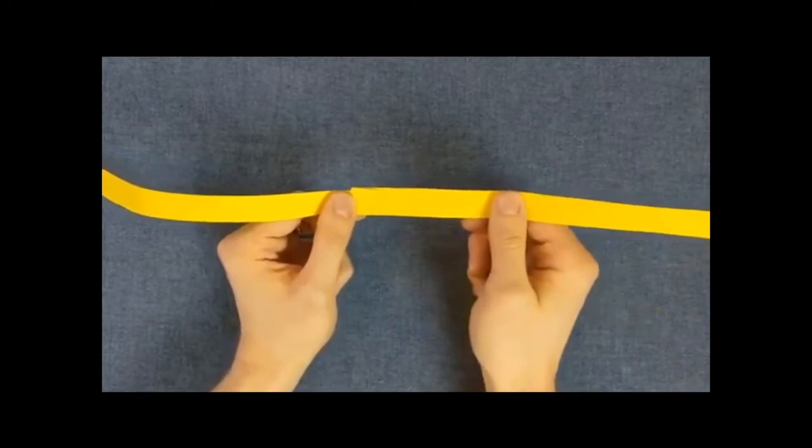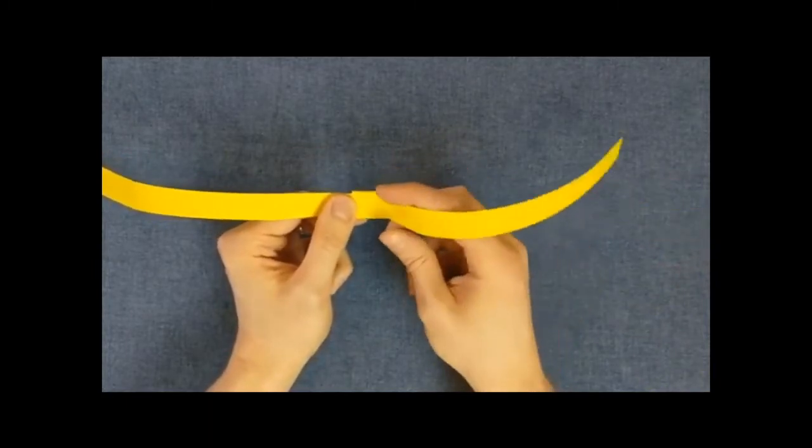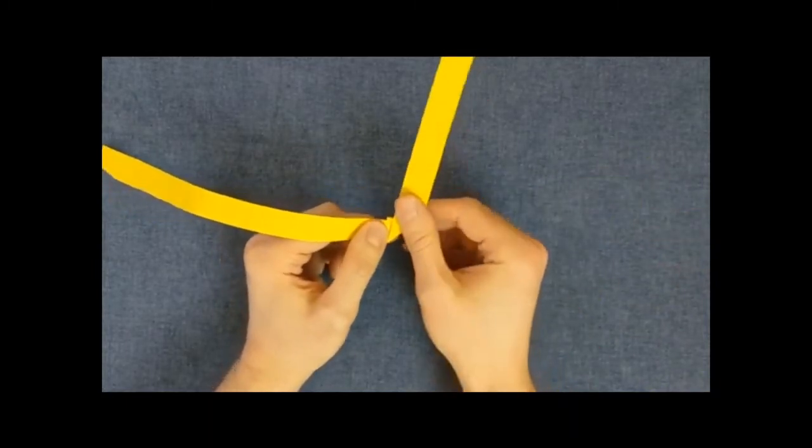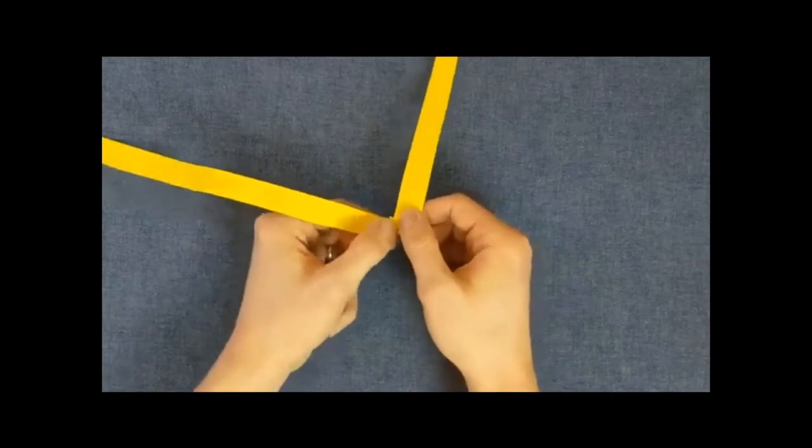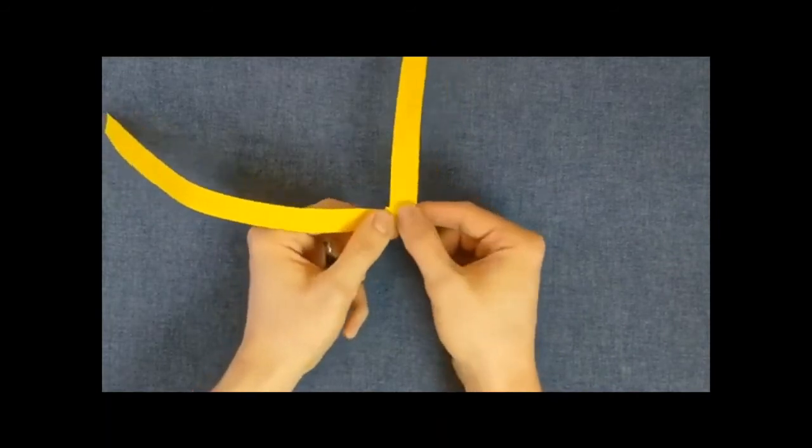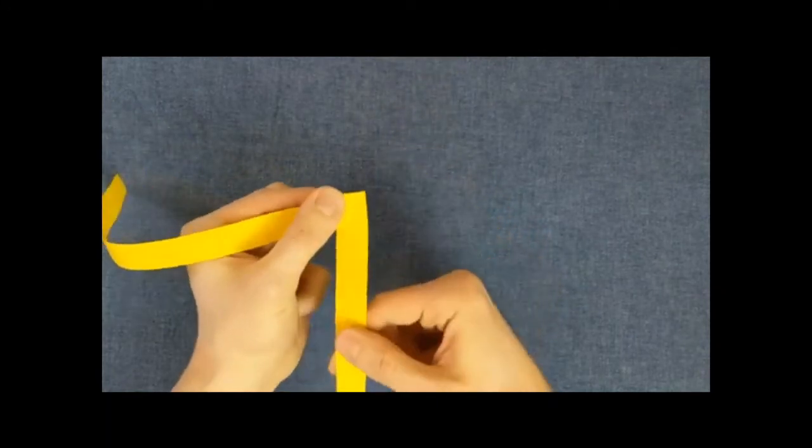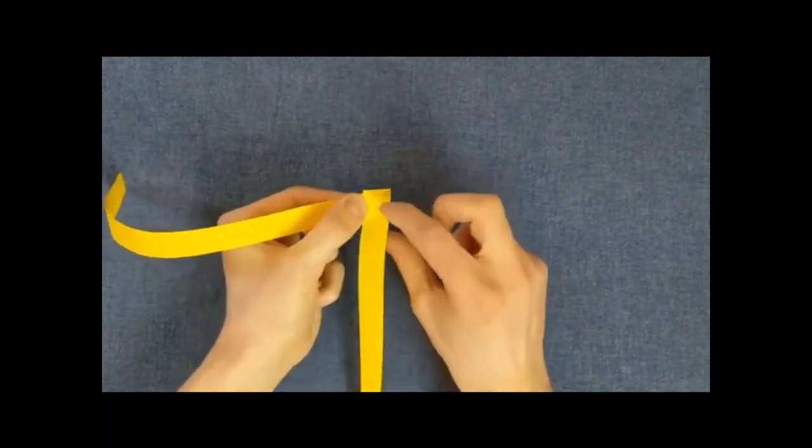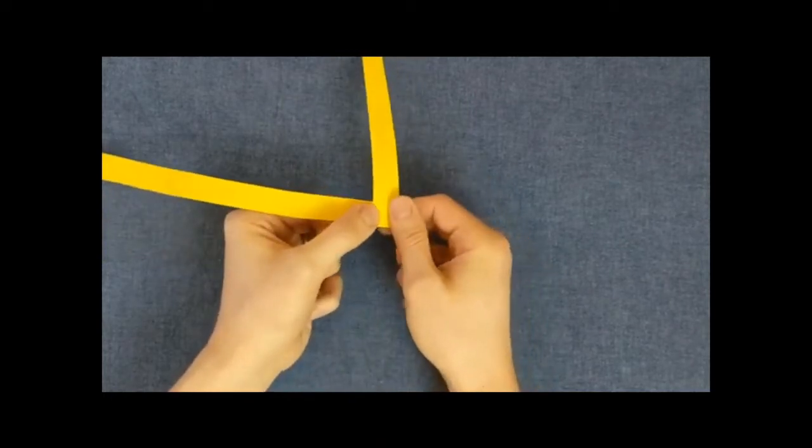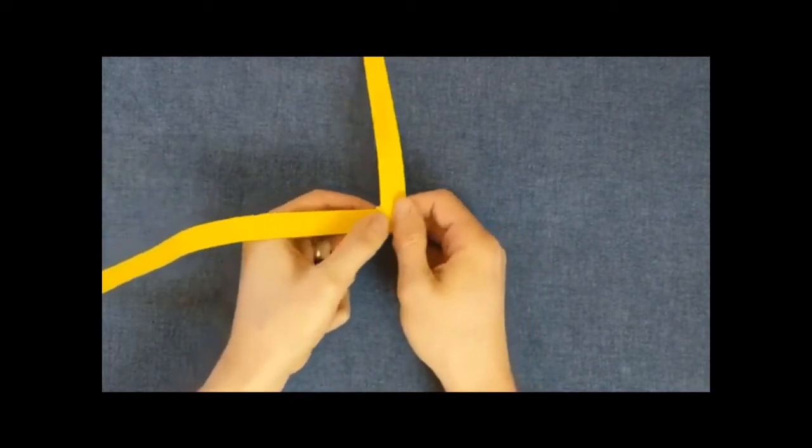So take this piece, this strip of paper on the right and do a 45 degree fold diagonally upwards. Should look like that. Then fold it down and then fold it up again. Like so.